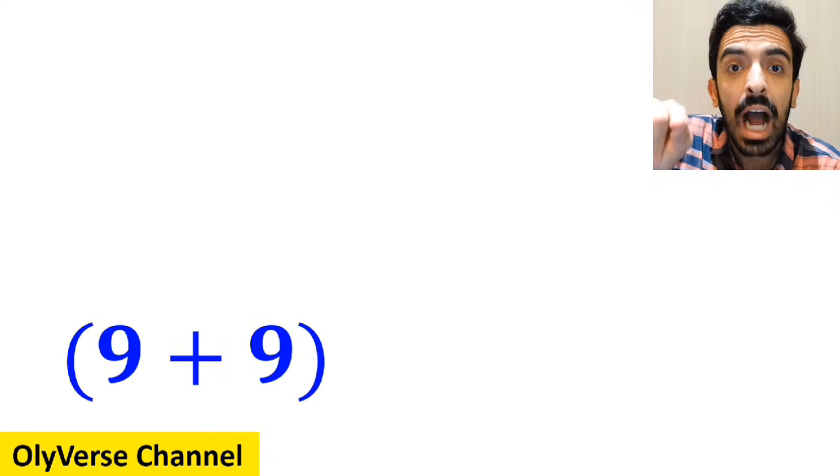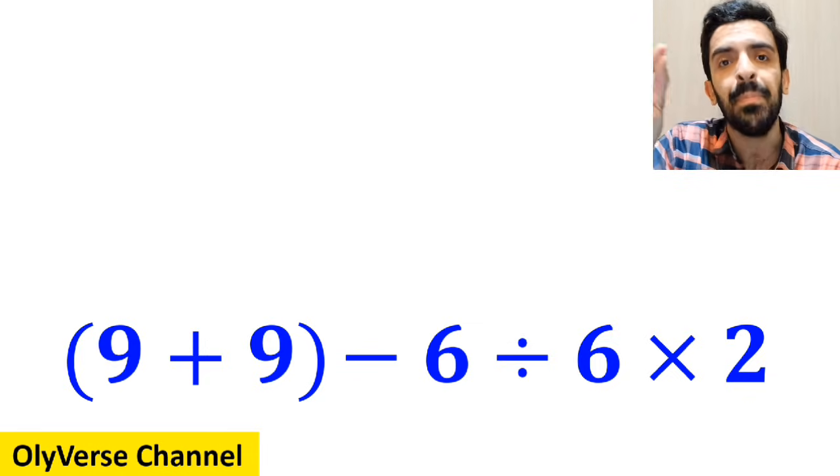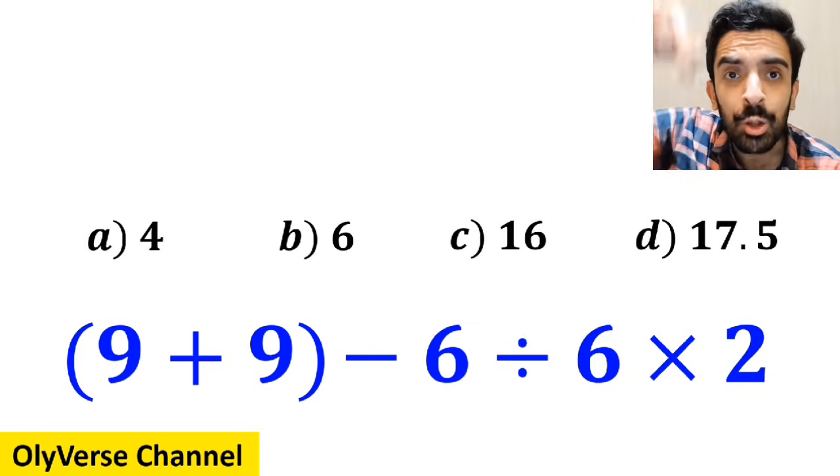What is the value of the expression 9 plus 9 inside the parenthesis, minus 6 divided by 6 times 2? Which option do you think is the correct answer to this question?